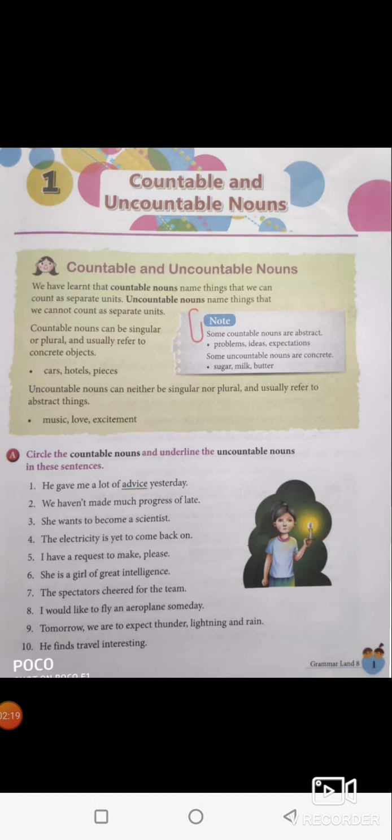Here you have an exercise. From your grammar book, circle the countable nouns and underline the uncountable nouns in these sentences. The first one says: he gave me a lot of advice yesterday. Advice is an abstract thing, so it is an uncountable noun. So advice is underlined.